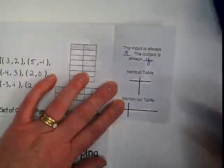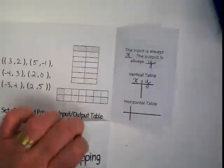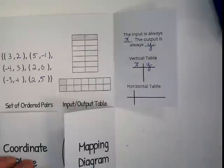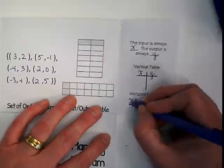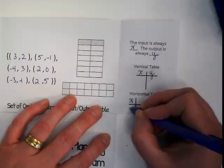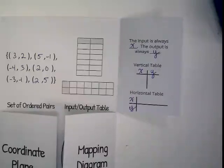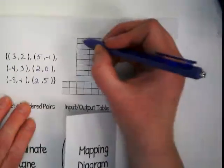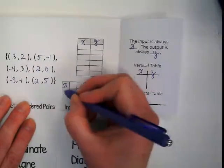So when we do this as a vertical, the X goes here and the Y goes here. And when we do it as a horizontal, the X goes here and the Y goes here. That means we're going to fill this in here with XY and this down here with XY.